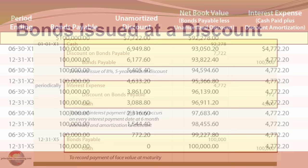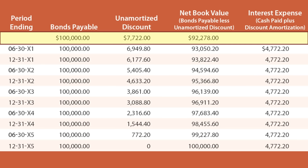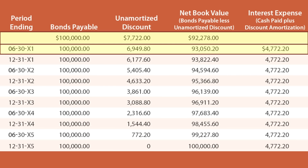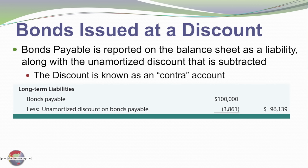This gives rise to an amortization table. We start with the $100,000 bond less the unamortized discount of $7,722, giving a net book value of $92,278. After the first payment, $772 of discount is amortized, leaving $6,949 unamortized discount and increasing the carrying value to $93,050. This process continues period after period until at maturity the discount is fully amortized and only the $100,000 remains.